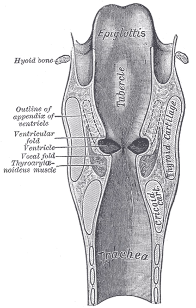After being converted into mechanical energy, the message reaches the oval window, which is the beginning of the inner ear. Once inside the inner ear, the message is transferred into hydraulic energy by going through the cochlea, which is filled with fluid, and onto the organ of Corti. This organ helps the sound to be transferred into a neural impulse that stimulates the auditory pathway and reaches the brain. Sound is then processed in Heschl's gyrus and associated with meaning in Wernicke's area.